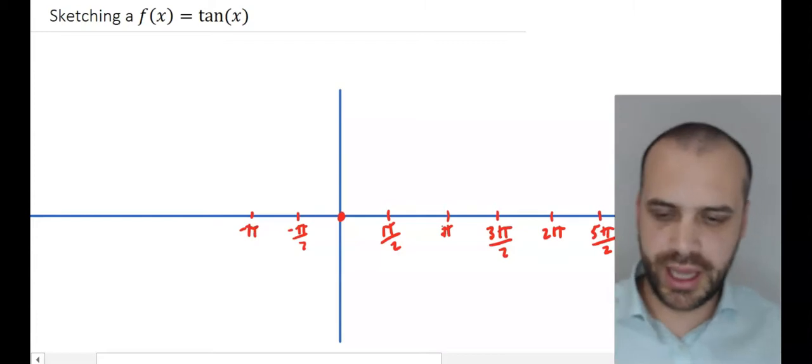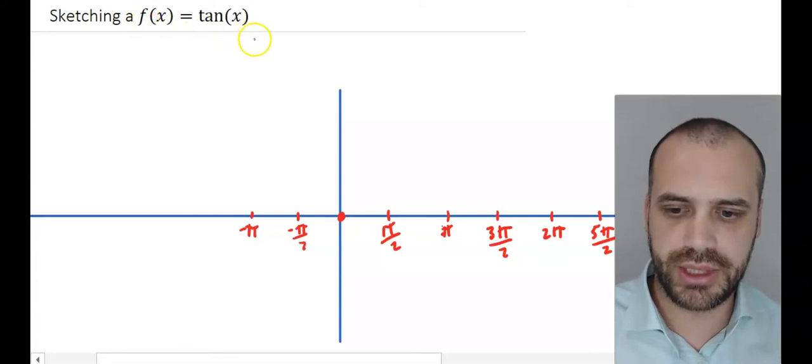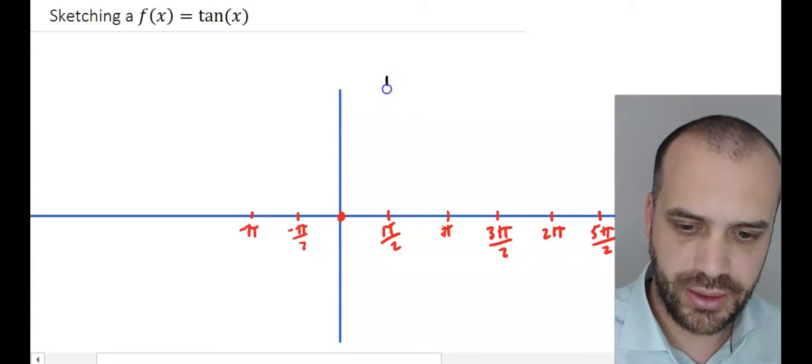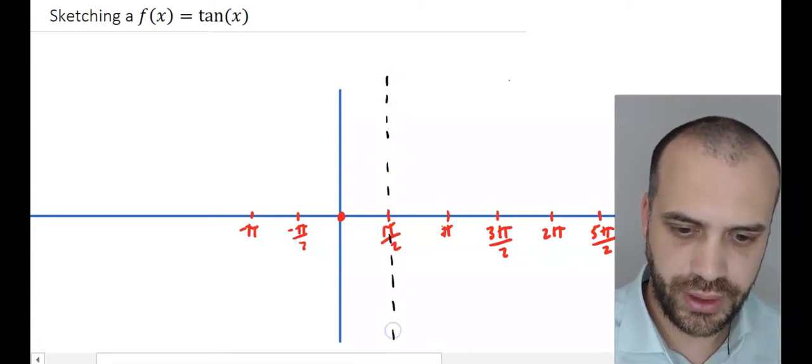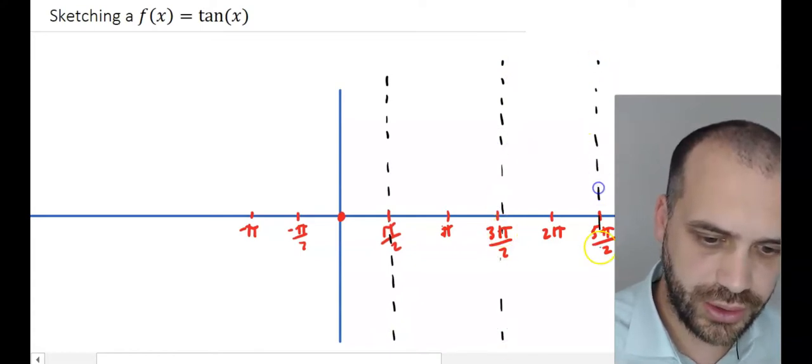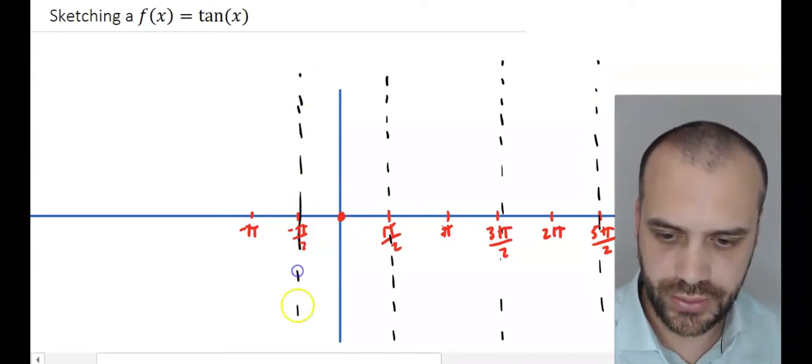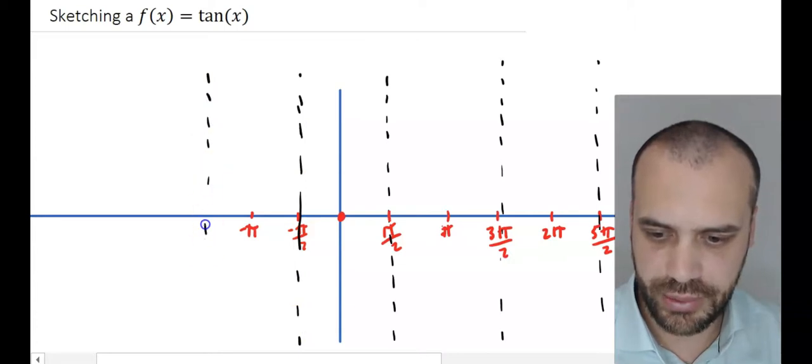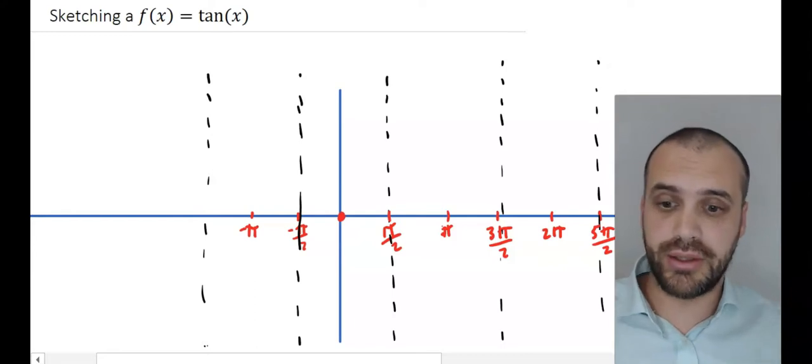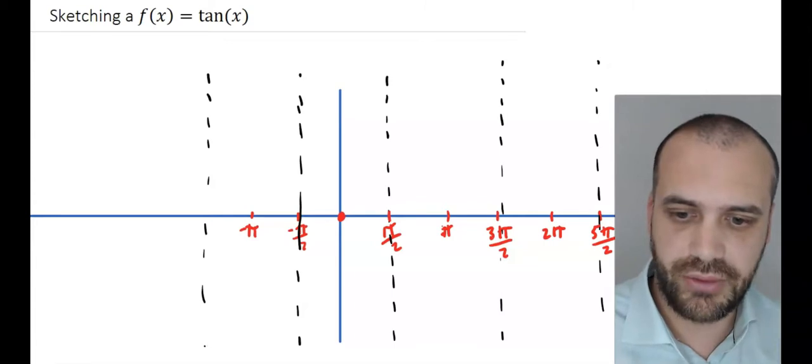Okay, it always has asymptotes, or at least when it's in its simplest form, f of x equals tan x. We're going to have asymptotes at the following places: pi on 2, 3 pi on 2, 5 pi on 2, and working the other way, negative pi on 2. And there's going to be another one over here at negative 3 pi on 2. All right, so all of my asymptotes, if you put them in, that's going to be really straightforward.